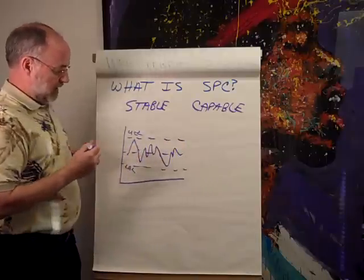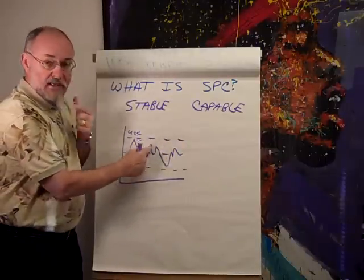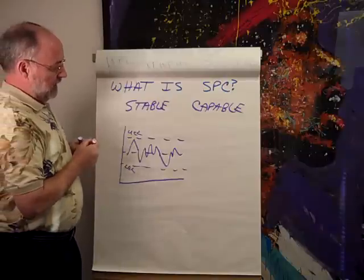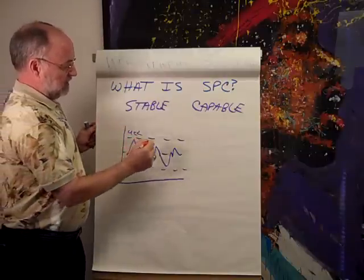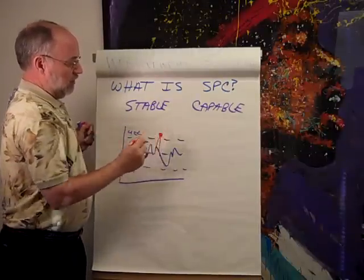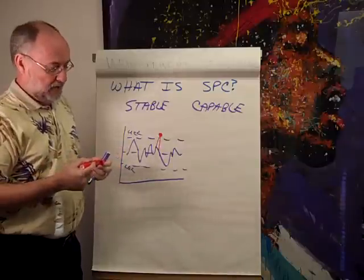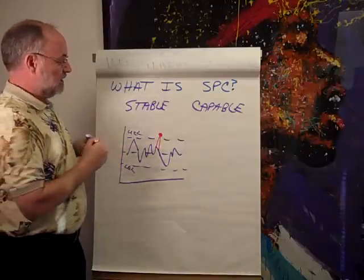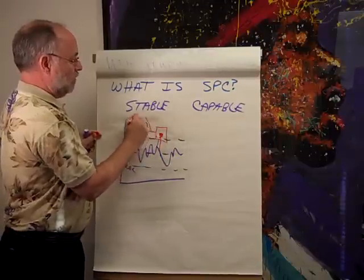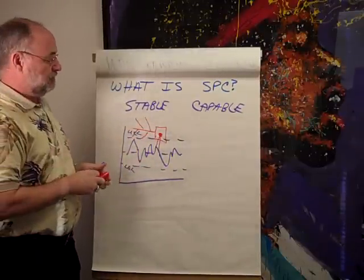These are all calculated from your data, based on how your process performs. If we have a point that's out of spec, we want to know that, because it means the process isn't stable — there's a special cause. We may want to do some root cause analysis on why that happened, and ask five whys.